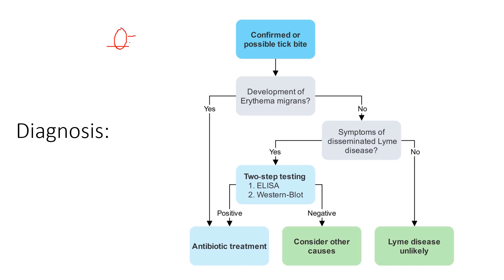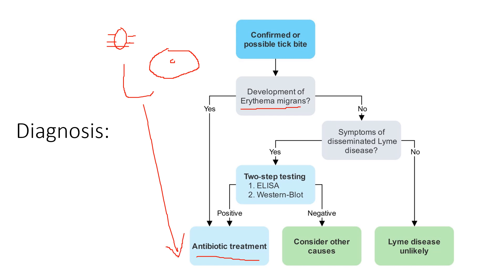It's straightforward if you have a confirmed tick bite — say the person brings the tick in with them to the clinic — and then they develop a bullseye rash called erythema migrans. In that case, you can go ahead and start antibiotics: confirmed tick plus rash equals antibiotics. If you have a suspicion of tick bite, the person lives in a wooded area and goes hiking a lot, and they develop symptoms of Lyme without the rash, that's when you want to do additional testing — either ELISA or Western blot.